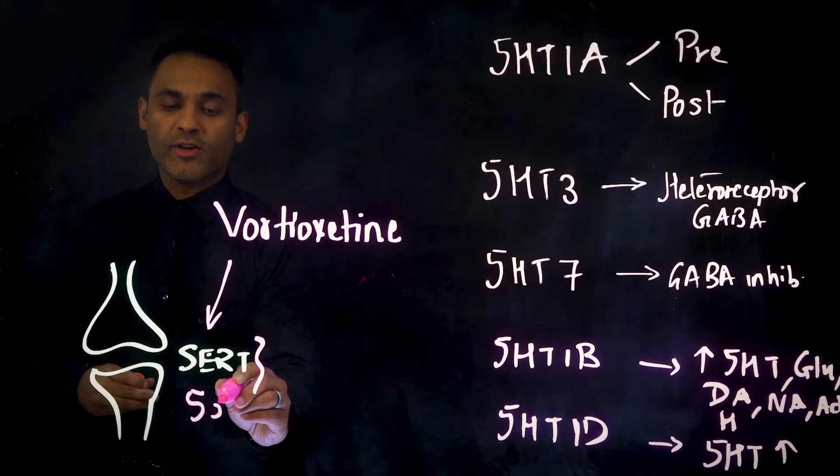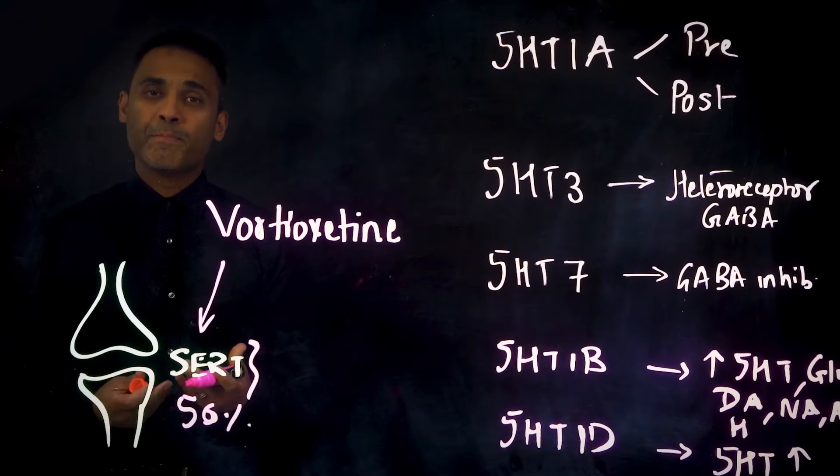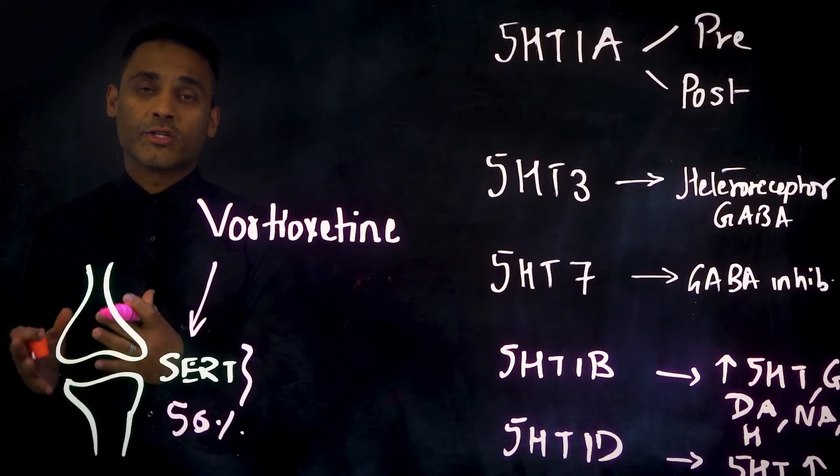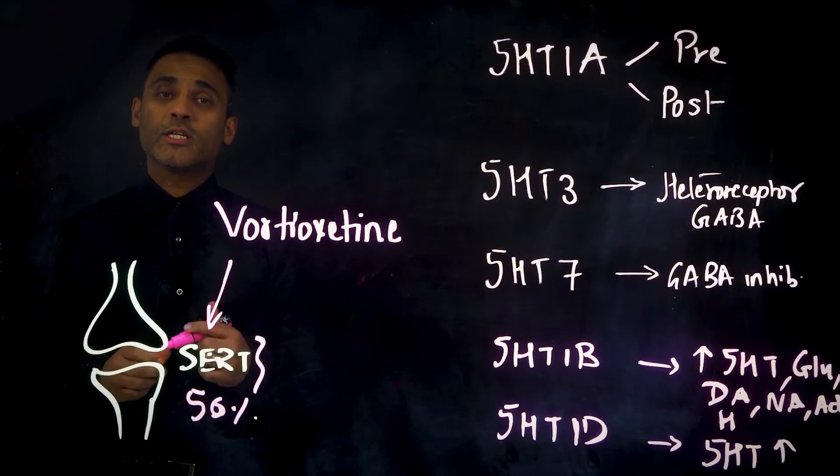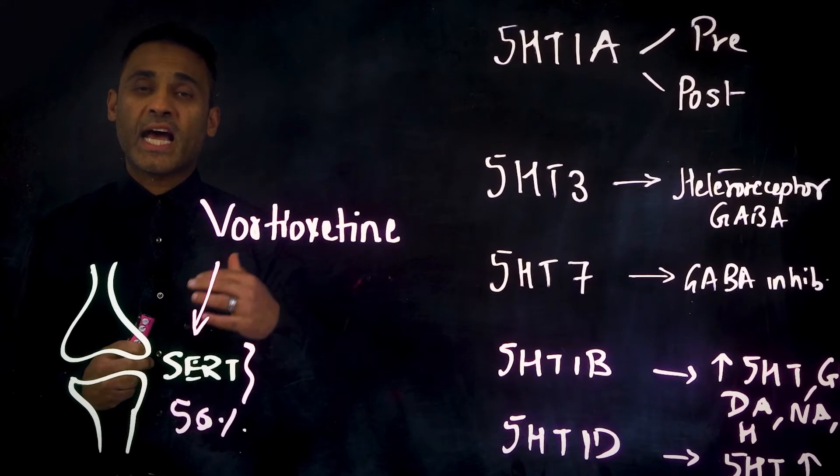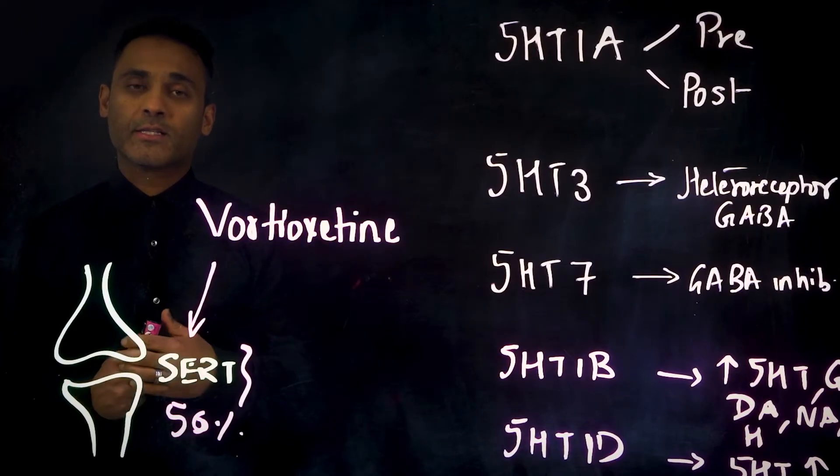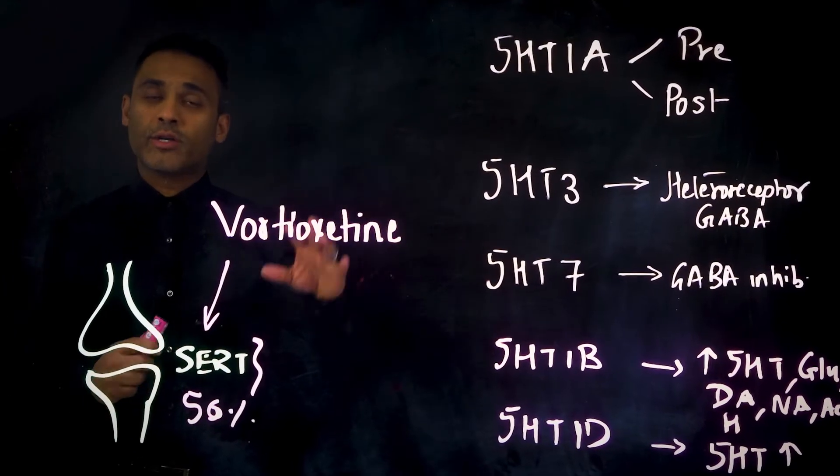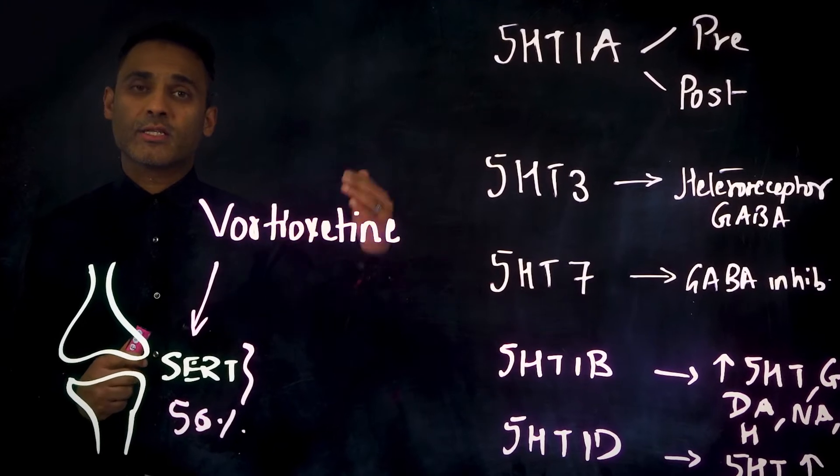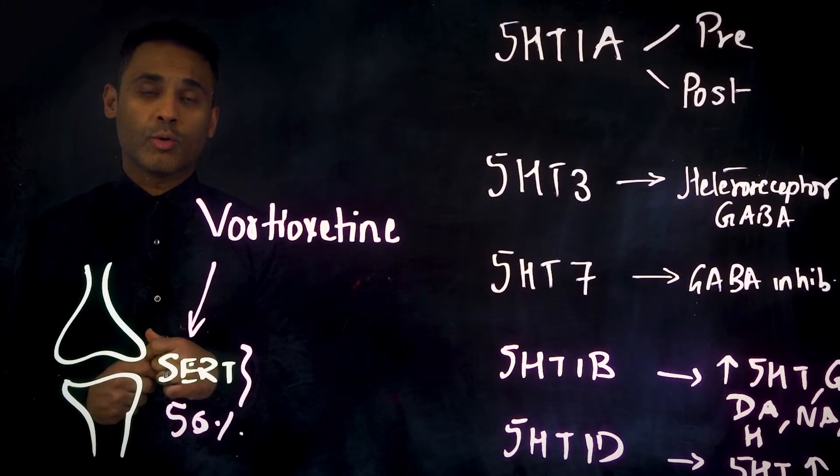So it's at times 50% lower than SSRI SERT affinity. Vortioxetine is also one of the agents that has a dose-dependent effect, so its activity on many of these receptors increases as we increase the dose.